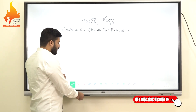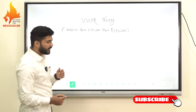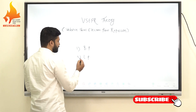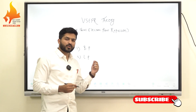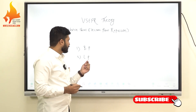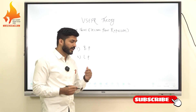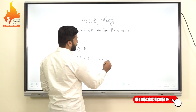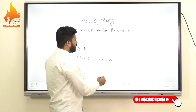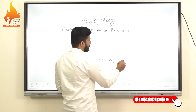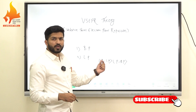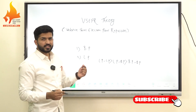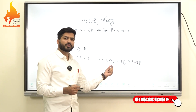When we talk about electron pairs, there are two types. First is bonding pairs and second is lone pairs. Bonding pairs are those electrons which are busy in making bonds, and lone pairs are those which are not making bonds. According to VSEPR theory, the repulsion between lone pair–lone pair is greater than lone pair–bond pair, and the repulsion between lone pair–bond pair is greater than bond pair–bond pair. This is the strength of repulsion order.